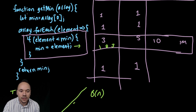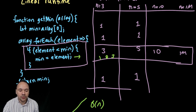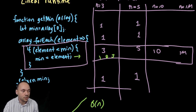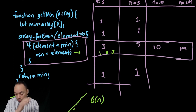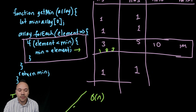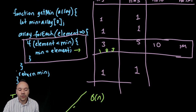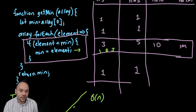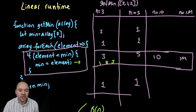You can recognize linear runtime algorithms whenever you have to go through each element of an array and perform some computation — finding the minimum, maximum, printing elements, or finding a value by scanning the whole array. You can also have multiple non-nested loops and it will still be linear. However, if loops are nested, that's a different story — which we'll explore next.